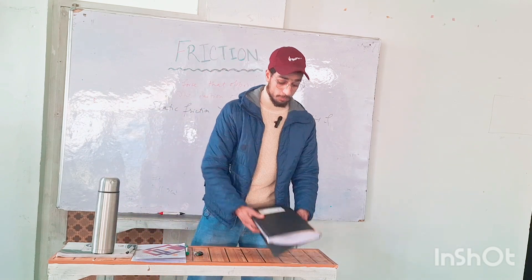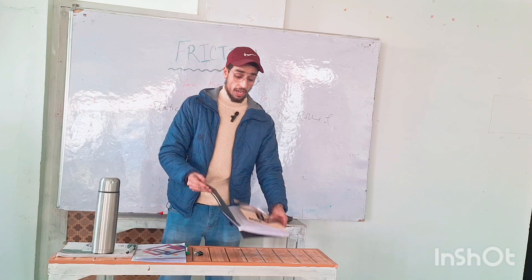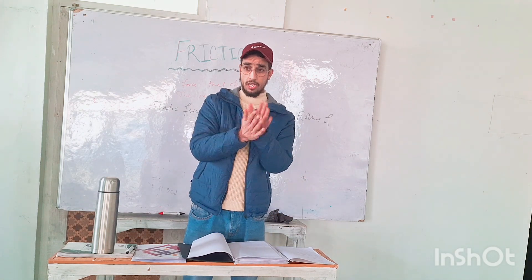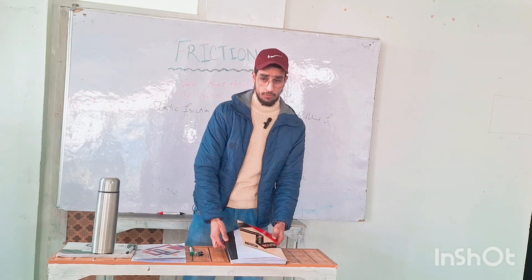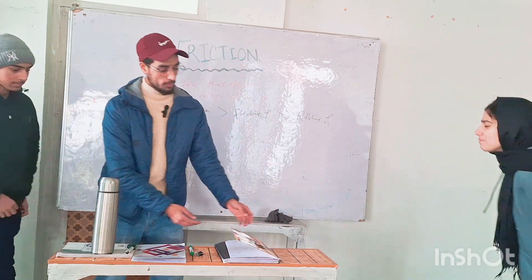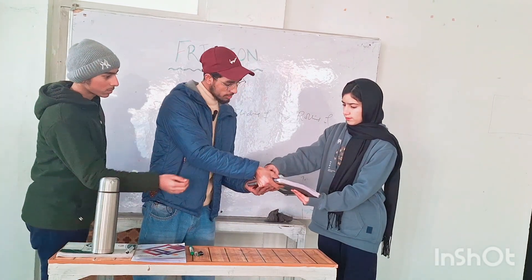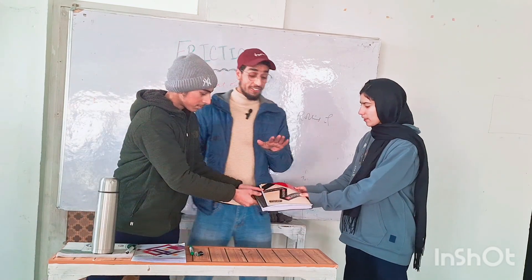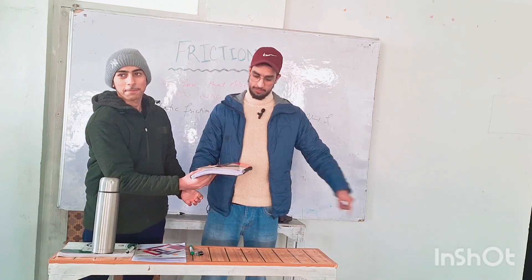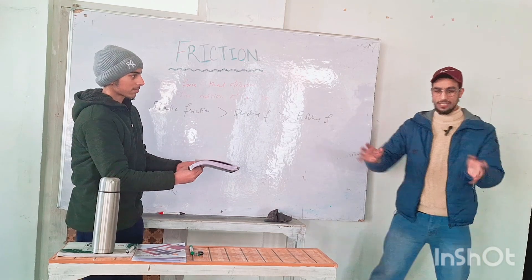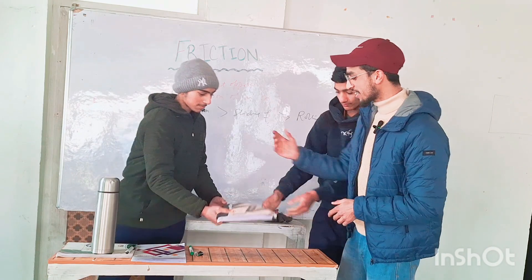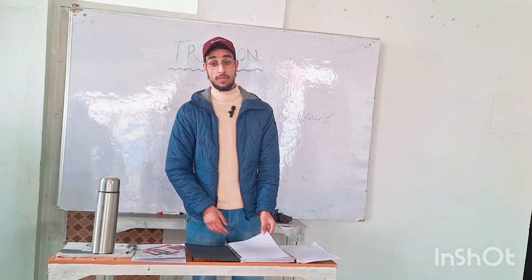There is an interesting activity using two notebooks — we interleave the pages of the two copies one after another. Now two students come here — one girl and one boy. Try to pull them apart from each side. Try to unwind them. Try to pull with force. It is very difficult — both students could not pull them apart. This is an example of friction — you can feel the friction here.